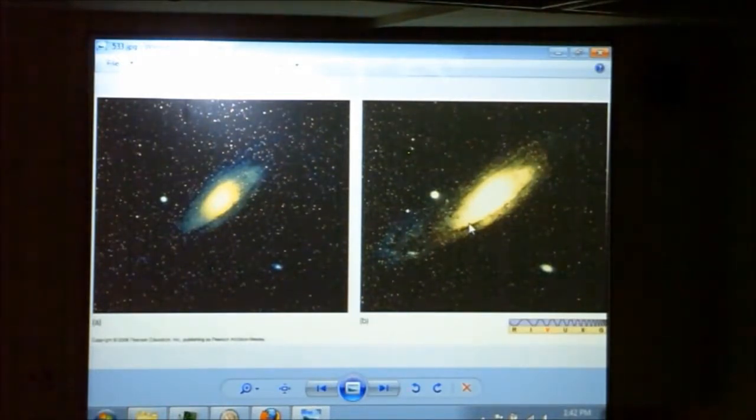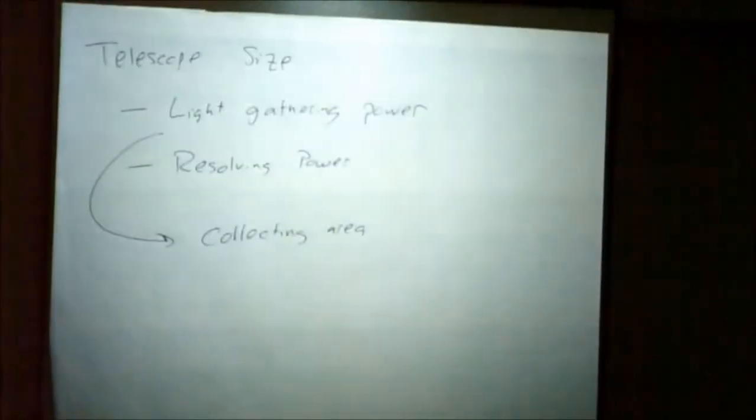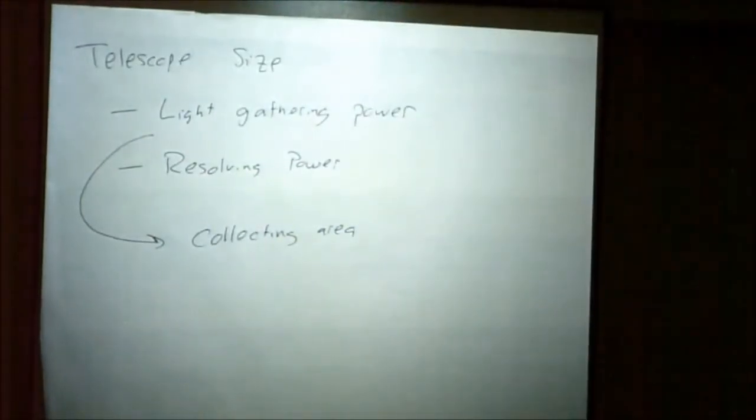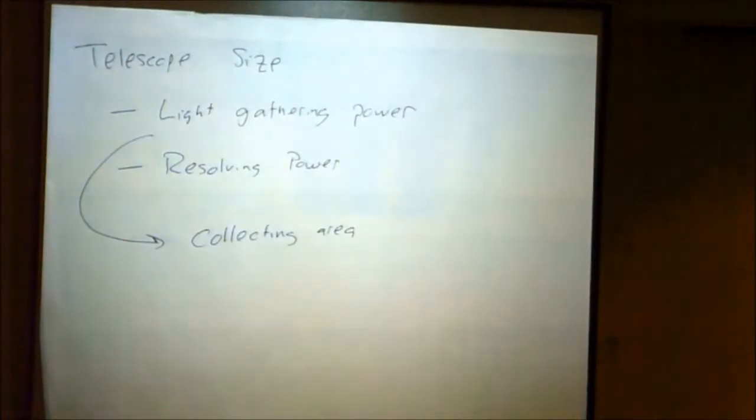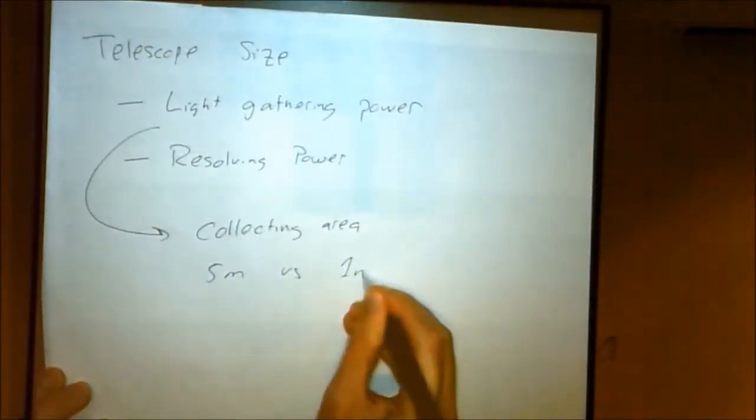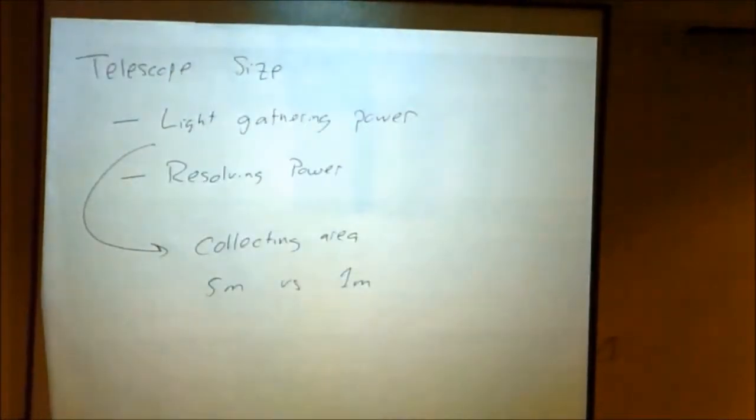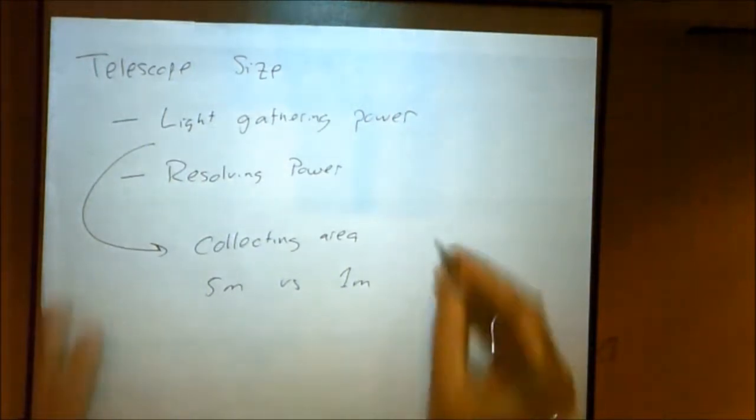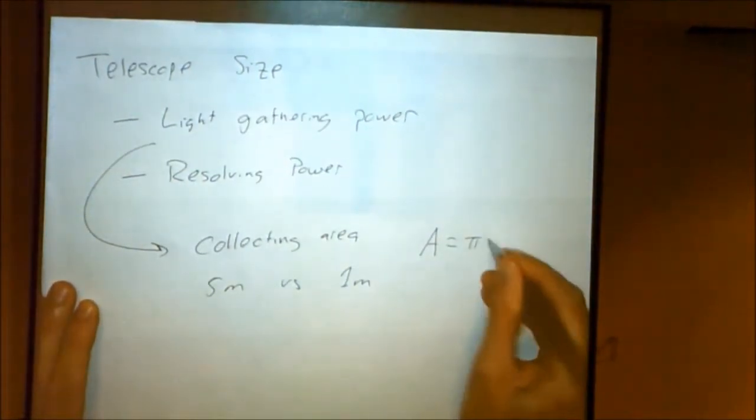Let me ask you some questions about collecting area. Light gathering power is all about collecting area. Suppose I have a five-meter telescope and a one-meter telescope. In the same amount of time, how much more light can you collect with a five-meter telescope? A lot of people said five. Twenty-five, that's right. Area of a circle is pi r squared.